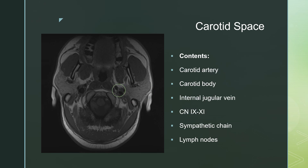In the carotid space, you have the carotid sheath with its contents: the carotid artery, the carotid body which lives at the bifurcation, the internal jugular vein, cranial nerves 9 to 11, the sympathetic chain which runs along the carotid, as well as lymph nodes within and around the carotid sheath. When you have a mass in the carotid space, your first thought is a carotid body tumor or paraganglioma if you have splaying of the internal and external carotid arteries. But you can also have neurogenic tumors involving cranial nerves 9 to 11, sympathetic chain masses, or lymphoma, which can exist in any of these spaces.